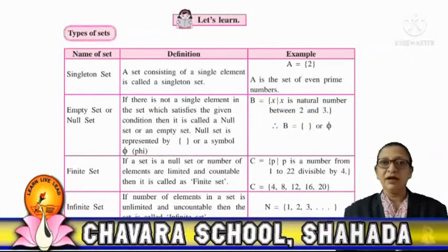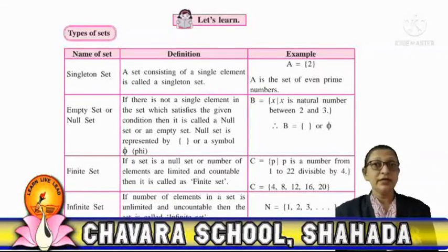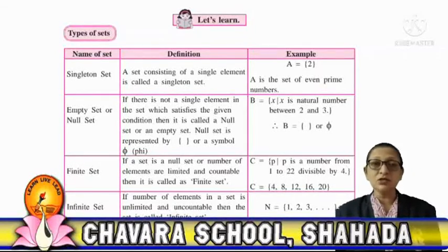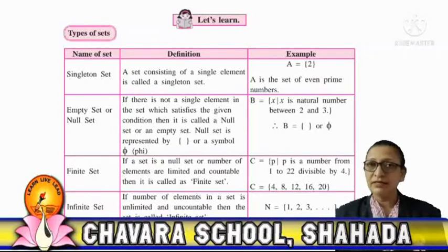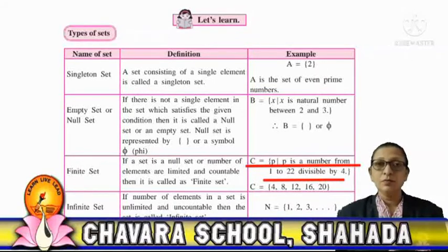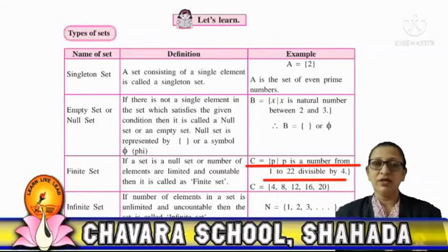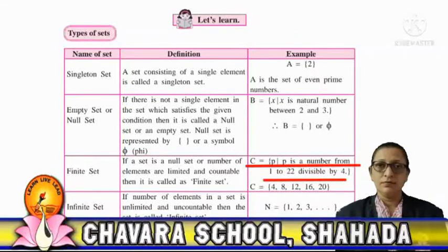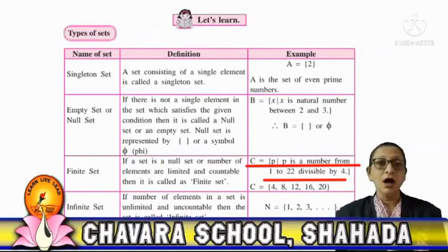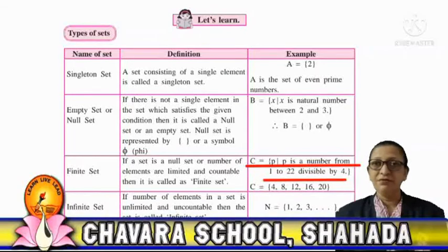Next is finite set: if a set is a null set, or the number of elements in a particular set are limited such that we can count them, such a set is called a finite set. For example, set C is the set of all p such that p is a whole number between 2 and 2.3. The number of elements contained are limited and countable, so it is a finite set.